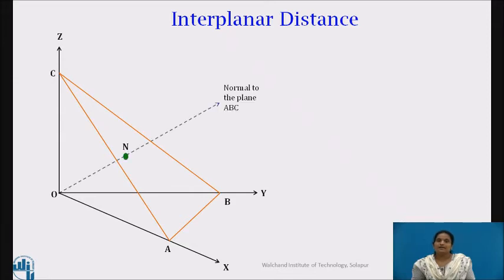Let a perpendicular is drawn from O to the plane ABC. Therefore, ON, the length of the normal from the origin to the plane is equal to D. Now let's join all these points.